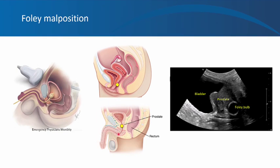In a male patient, you can prematurely inflate the Foley bulb in the prostatic urethra, also causing obstruction. The grayscale ultrasound image shows a full bladder with the Foley bulb in the prostate gland — inflating the bulb there means the bladder is not draining and remains full. Always pay attention to normal anatomy and the location of the Foley bulb.